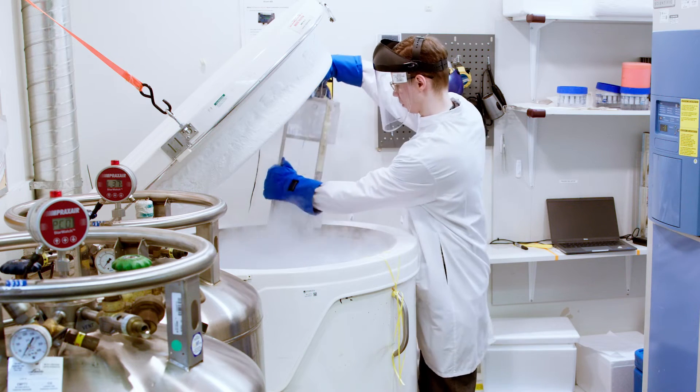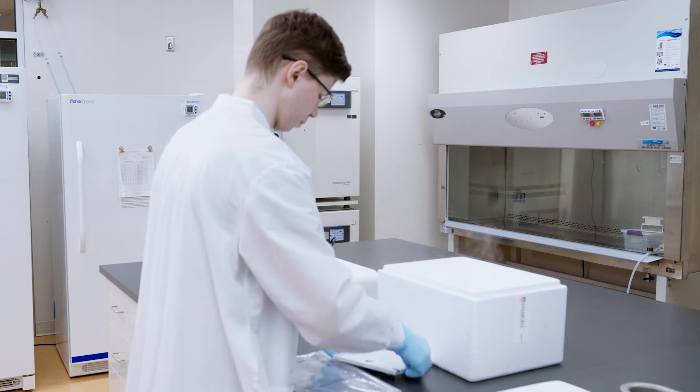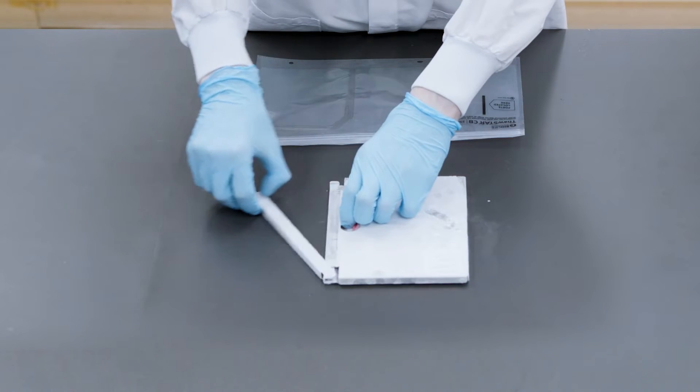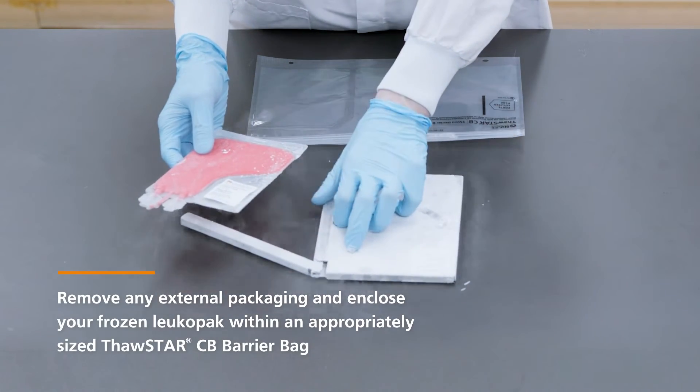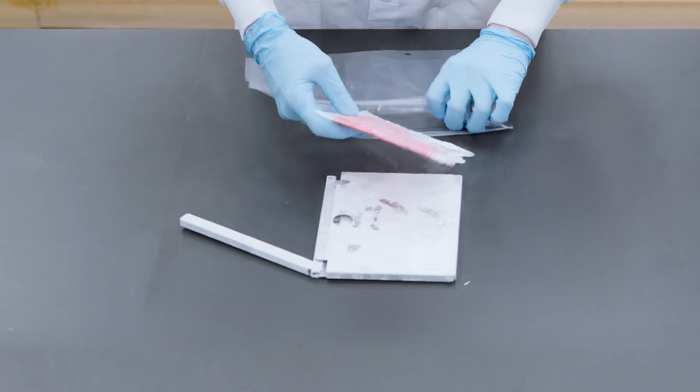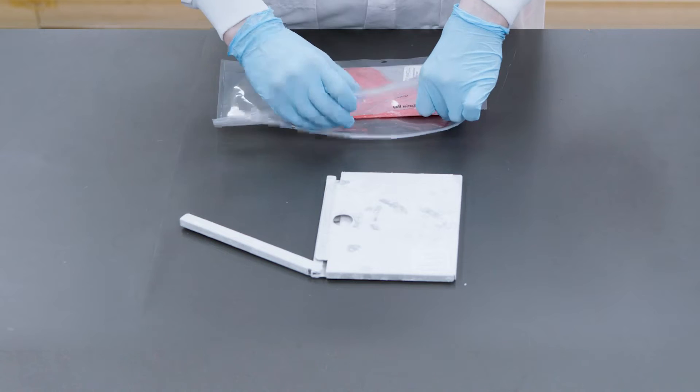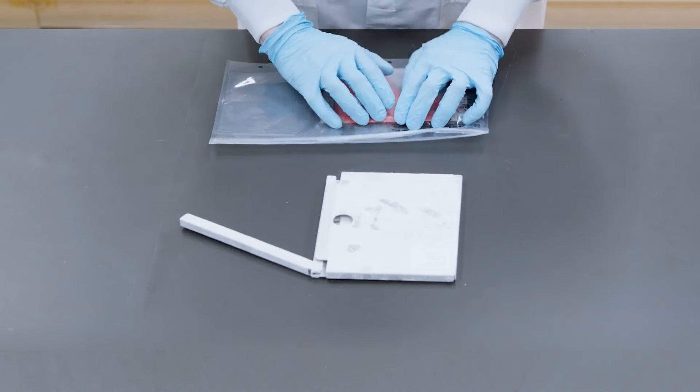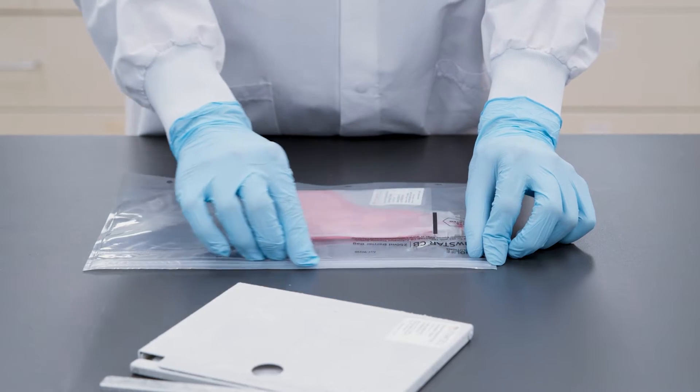When you're ready to begin, carefully remove your frozen Leukopax from storage and bring it to your workstation. Be sure to remove any external packaging and enclose your frozen Leukopax within an appropriately sized Thawstar CB barrier bag. The barrier bag helps reduce the risk of sample loss and contamination throughout the process. Remove all excess air and seal tightly to ensure proper positioning and alignment, allowing for optimal thawing.